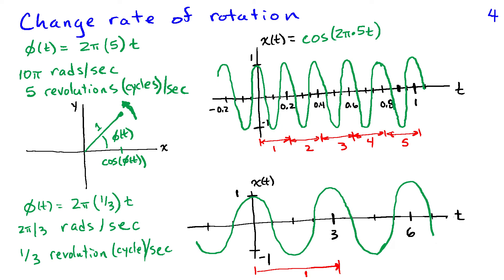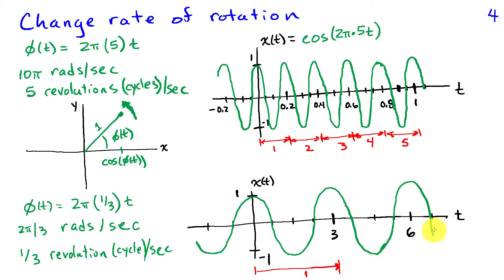What if we make the rate of rotation slower? Setting phi(t) = (2π/3)·t means we're rotating 2π/3 radians per second, which corresponds to 1/3 of a revolution or 1/3 of a cycle per second. The corresponding projection onto the x-axis is cosine(2π/3 · t), and it follows an oscillation where we get one cycle in three seconds — or two cycles in six seconds.